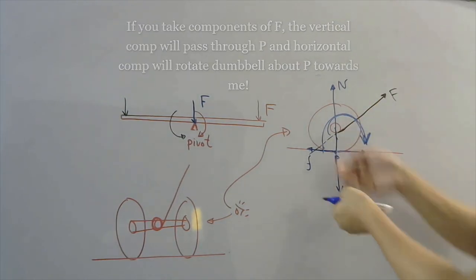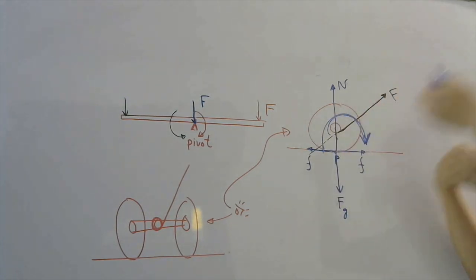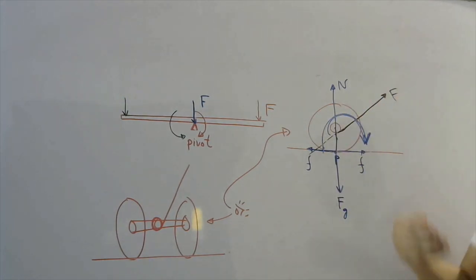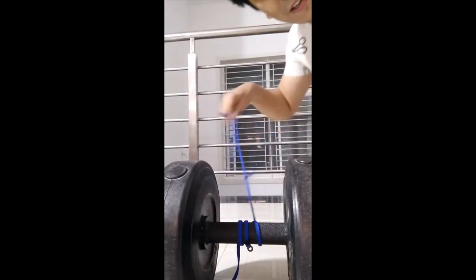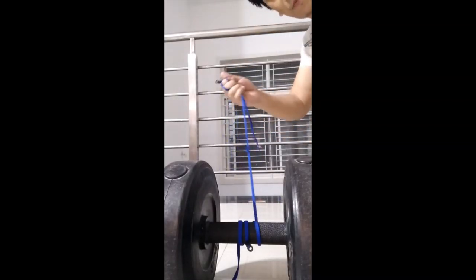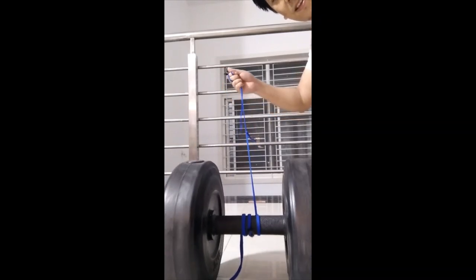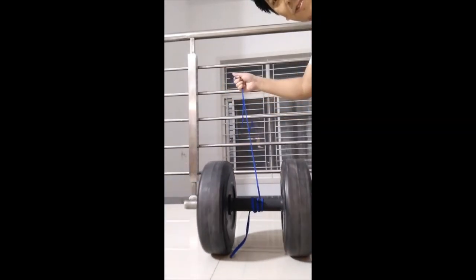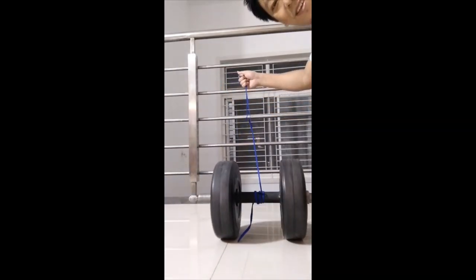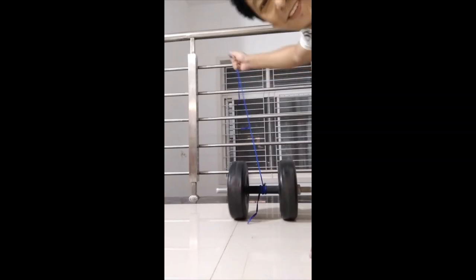Therefore this whole thing will rotate about the contact point, which means it will come towards me. Which way will it roll? I'm going to pull it towards me — and you can see it rolls towards me, as physics says.